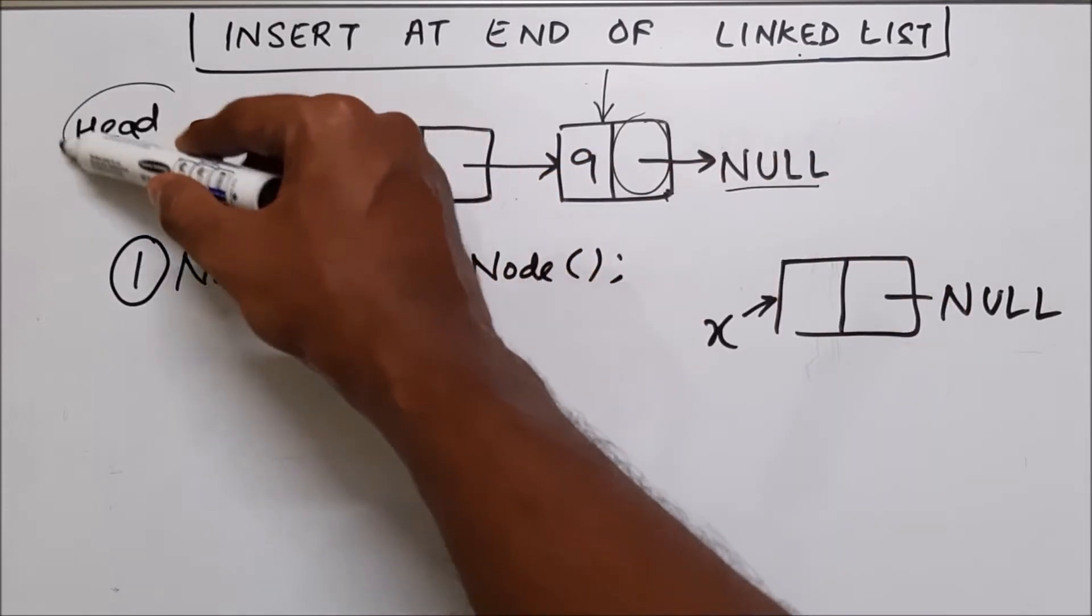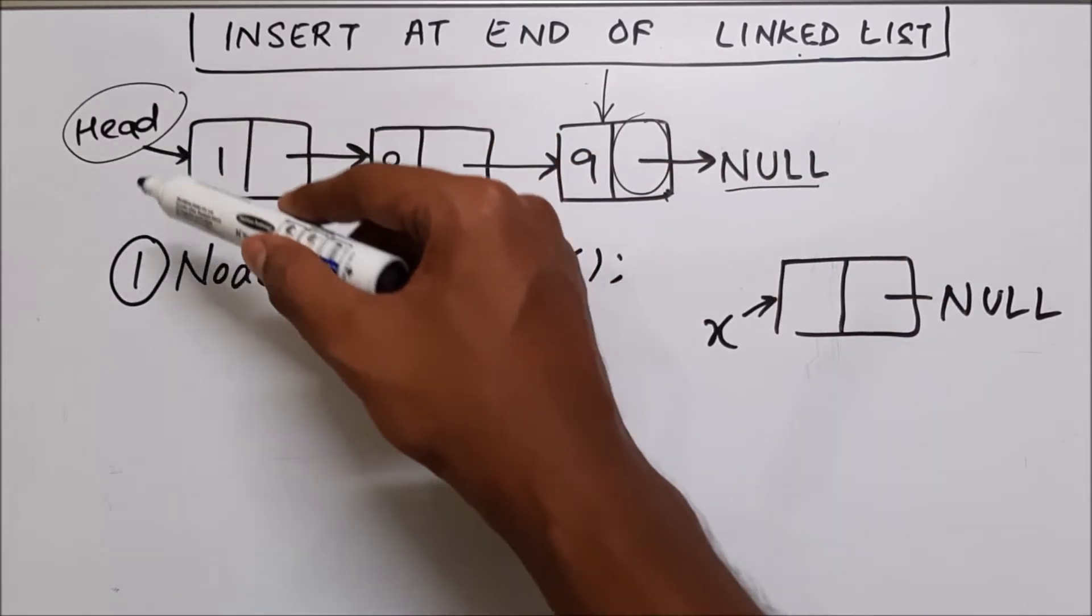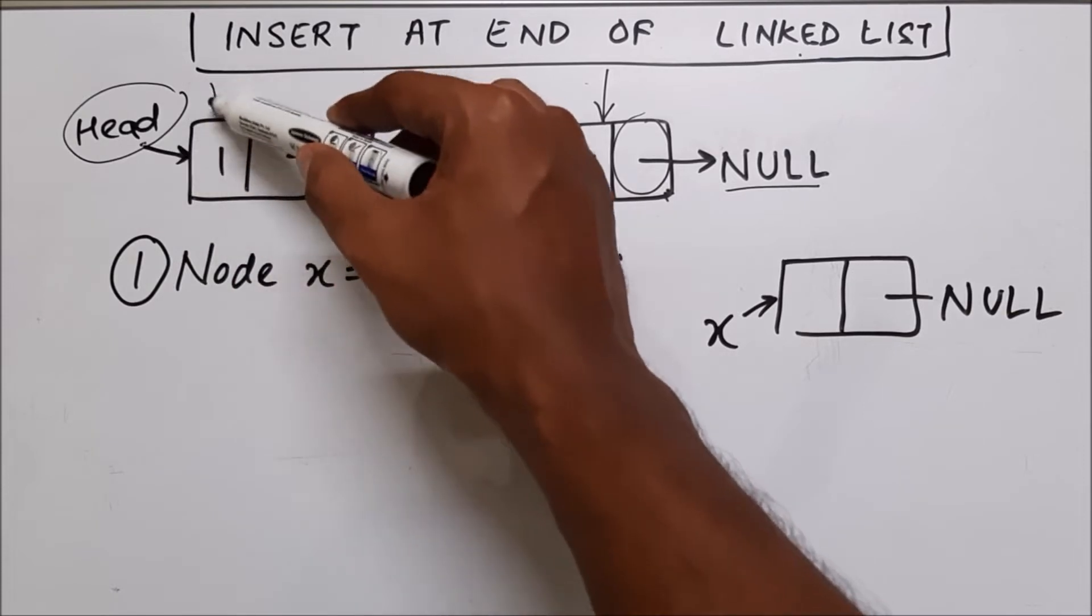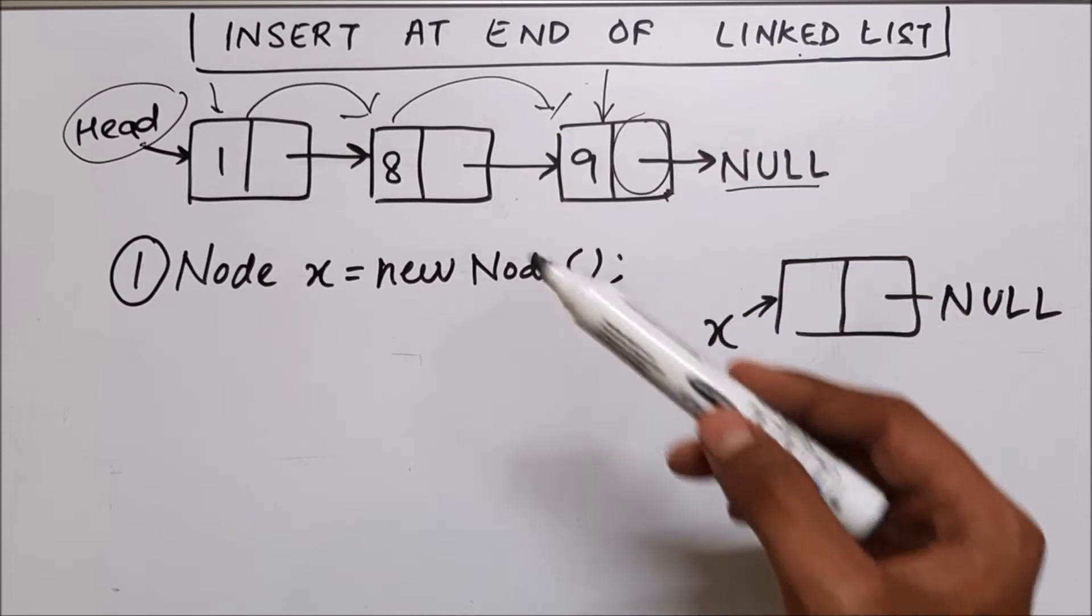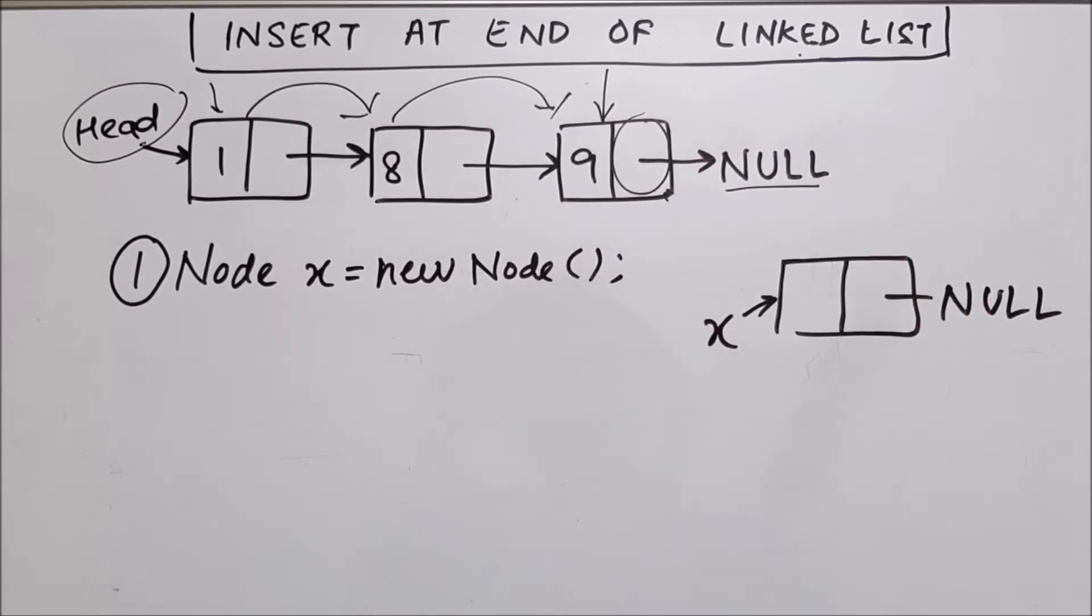We have head which is pointing to the first node. Using this head, we can start from here and we can traverse till the last node and how we'll do that we'll use a while loop.